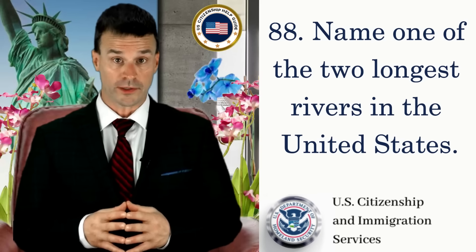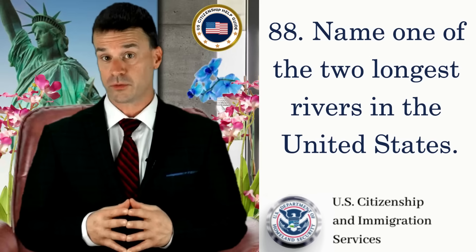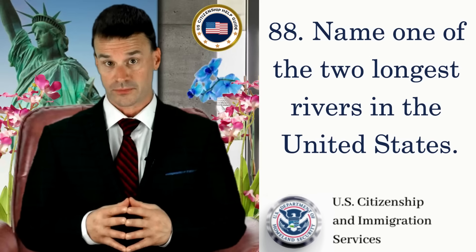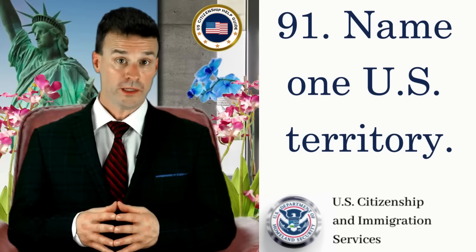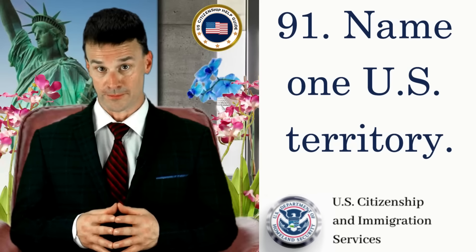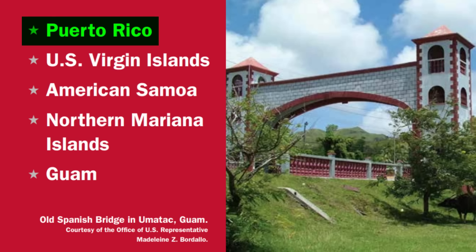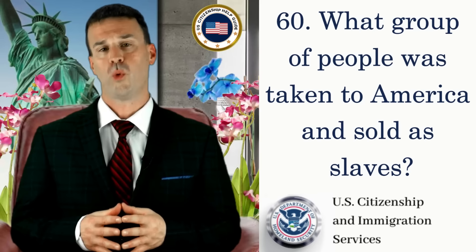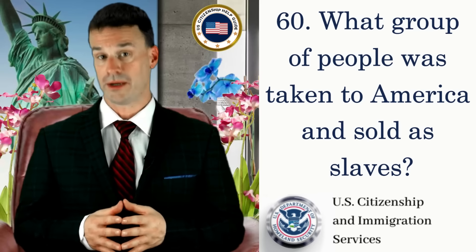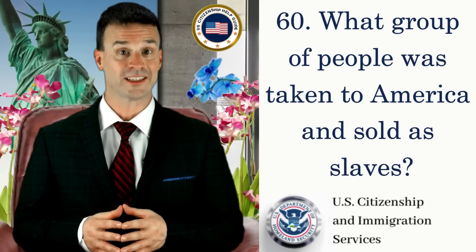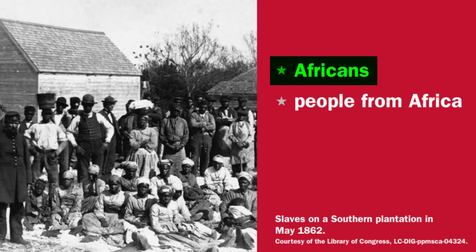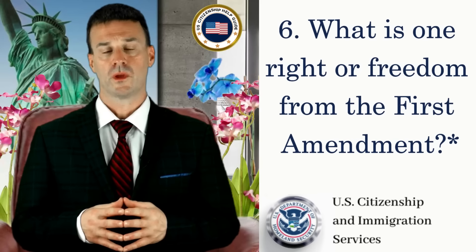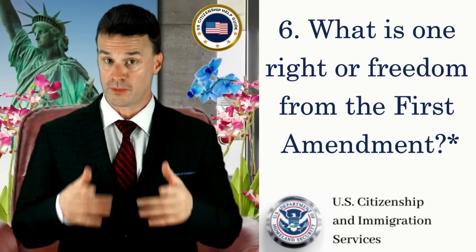Name one of the two longest rivers in the United States. Mississippi River. Name one U.S. territory. Puerto Rico. What group of people was taken to America and sold as slaves? Africans.